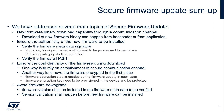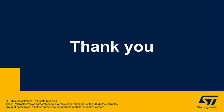In this section, we have addressed several main topics of secure firmware update. First, new firmware binary download capability through a communication channel. Second, ensuring the authenticity of the new firmware by verifying the firmware metadata signature and the firmware hash. Third, ensuring the confidentiality of the firmware during download by using a secure communication channel or by encrypting the firmware in the first place. And last, avoiding firmware downgrade by checking the firmware version during the verification procedure. Now you should have a complete view of security concepts, STM32 MCU security features, and how those could be used to protect firmware. You have also the idea of what secure boot and secure firmware update are and their basic flows. This concludes the MOOC. Thank you for watching.